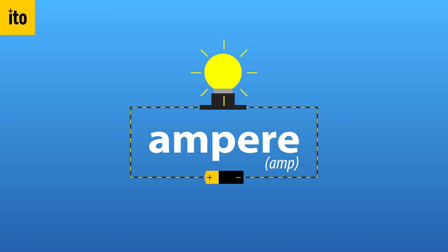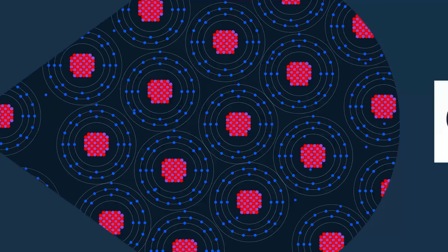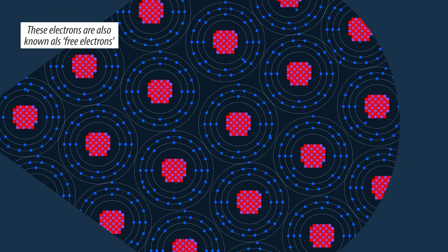So what is an amp? A quick recap. Metals like copper have electrons that flow freely throughout the material, from atom to atom, even at room temperatures.